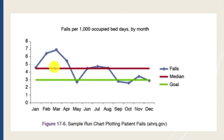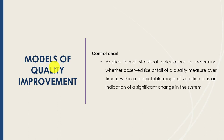In March the number was nearly seven, which was not good, whereas in May the team hit their goal. The numbers fluctuate from month to month. Applying the rules — looking for six consecutive points above or below the median, or five or more consecutive points all increasing or decreasing — helps us analyze whether we are witnessing a true trend, an actual shift, or just random fluctuation.